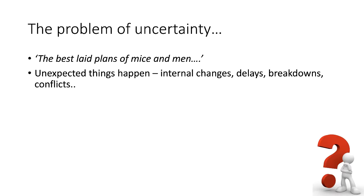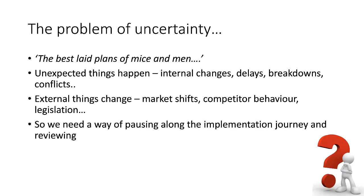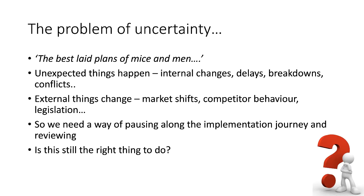Unexpected things can and do happen. Inside the organisation: people move on, there may be delays, unexpected breakdowns of machines and equipment, battles and conflicts that force a different way forward. And outside, the same sort of thing is happening — the market is changing, it may no longer want what it said it wanted when we started, the competition may start to move in the same direction, the government may change the rules, regulations may shift, legislation may push us in a new direction. With all of this uncertainty, we probably need a way of pausing along our implementation journey and reviewing where we've got to, with one key question in mind: is this still the right thing to do?